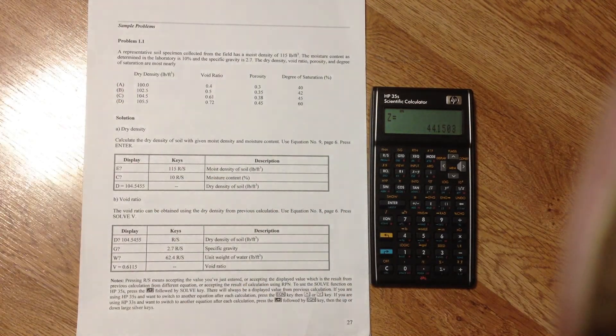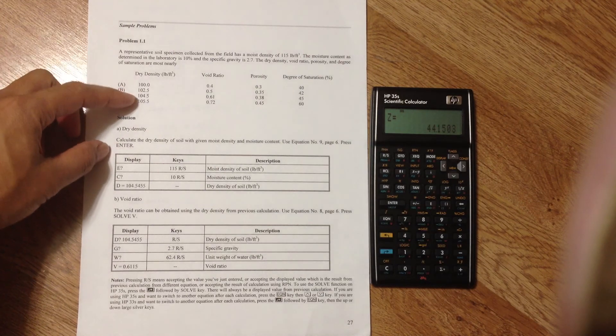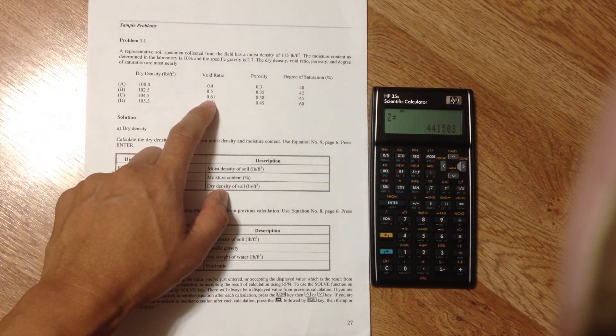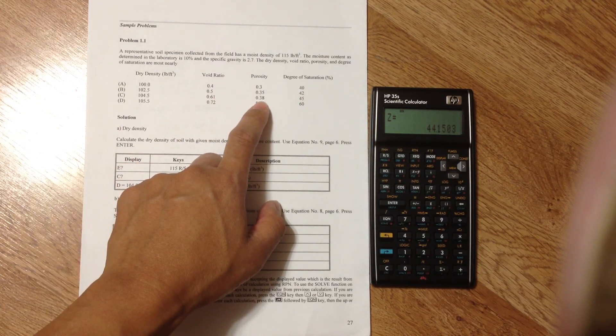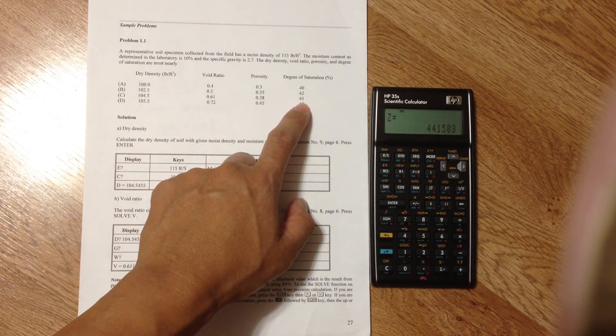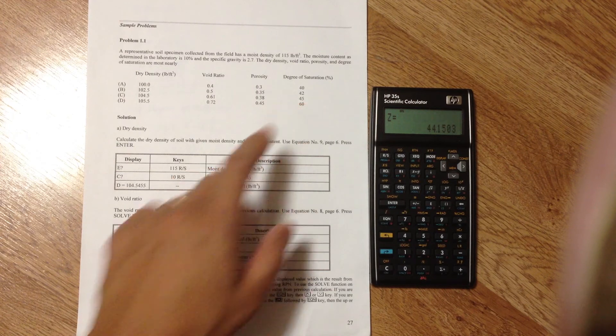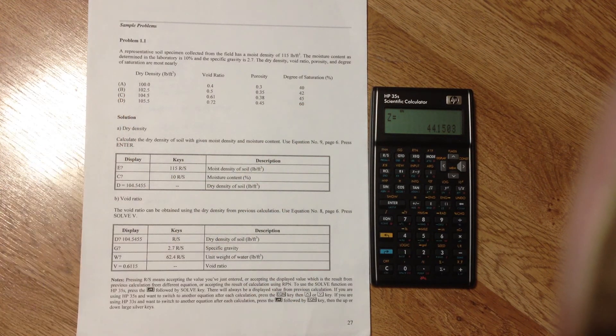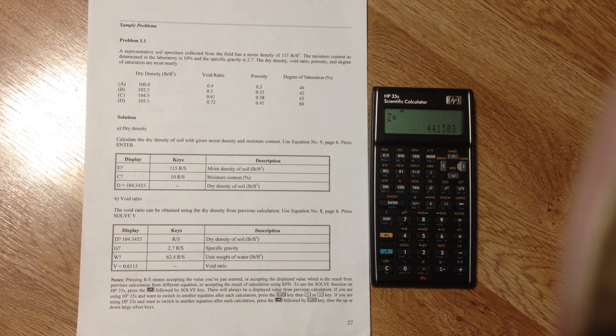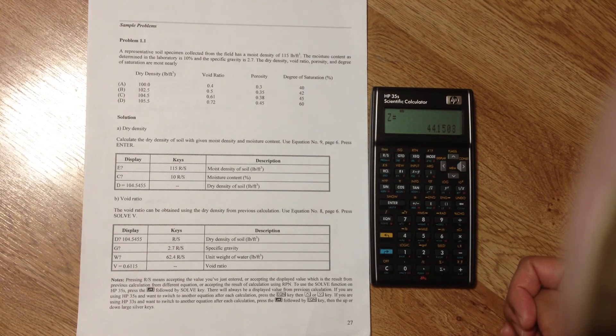Dry density of 104.5 pounds per cubic foot. Void ratio is 0.61. Porosity is 0.38. And degree of saturation, 45%. So, the nearest answer is C. And that's how you use HP35S calculator with my equations.